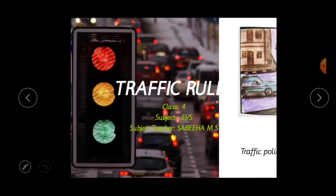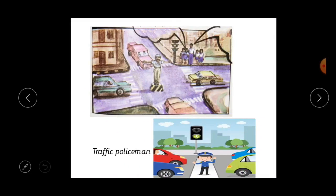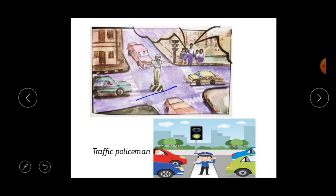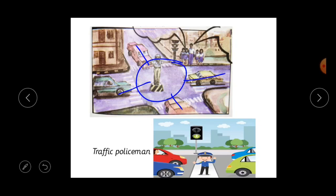So children, here in this lesson we are going to study about traffic rules. Can you see this picture here? So here, who is standing in the middle of the road? He is a traffic policeman. You might have seen him. So it is a place where four roads meet. Here you can see the traffic police is standing in a circle. A circle is a place where four roads meet — here you can see there are four roads which meet here. So this is called the circle where the traffic police is standing.